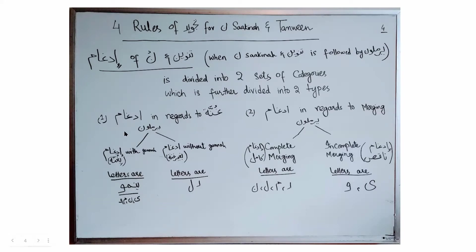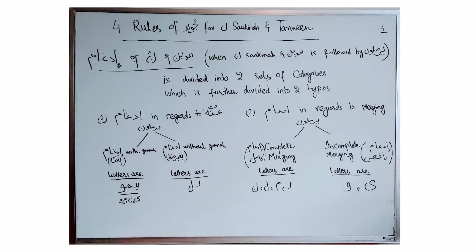When dividing Idgham of Noon Sakina in regards to Gunna, we divide the Yermalun letters into two categories. When Noon Sakina or Tanween is followed by the Yanmu letters — Ya, Noon, Mim, or Waw — we merge the sound of Sakin Noon along with the Gunna, the nasal sound. When Noon Sakina or Tanween is followed by letter Ra or letter Lam, we merge them without the nasal sound, without Gunna.